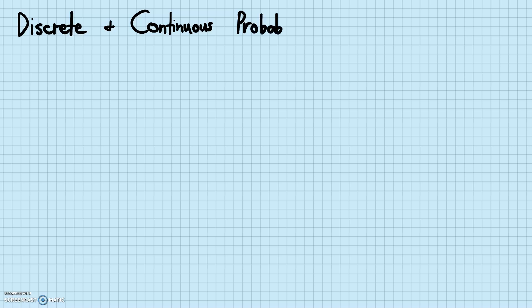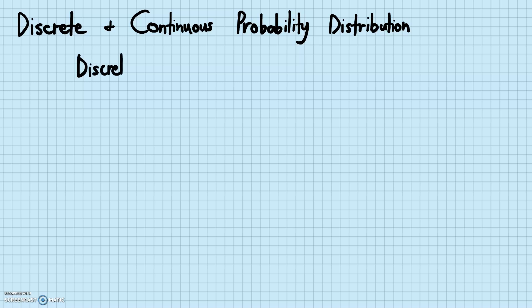First we need to know what discrete and continuous data are. These are basically two different kinds of data that we use in real life. I'll put discrete over on this side and continuous over on this side.